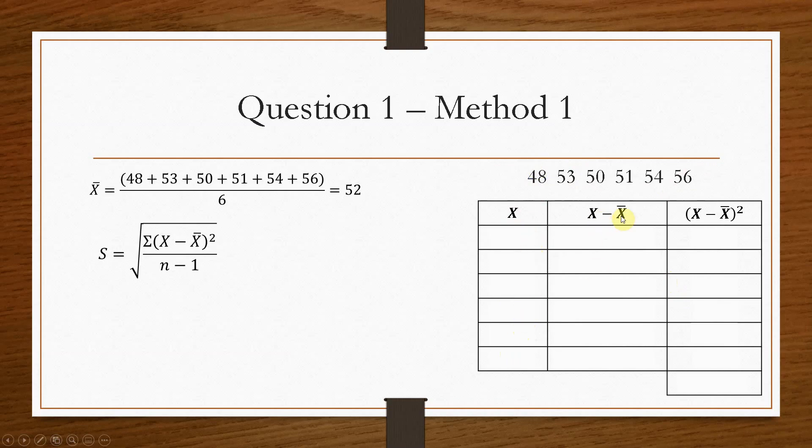Now x minus x bar is going to be this value, i.e. this value, take away the mean, which is 52. And then this column is going to be this value squared. So whatever number we achieve here will be squared in here. So let's fill in our columns. So here we'll just 48, 53, 50, etc. This is just this data set.